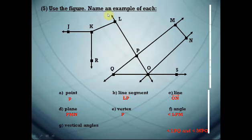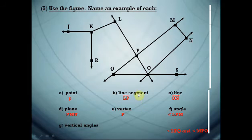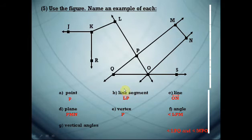Now, use this figure and name an example for each. Point — we have many points: point J, point K, point R, point L. We write point P. Line segment — we can choose any: PL, PQ, PM, MN, NO. We must write the line segment symbol over it. Line — we have line MQ, line NO, and line LO.